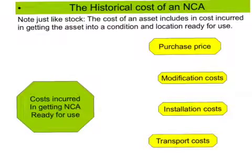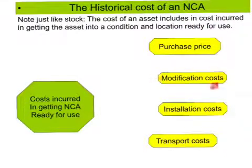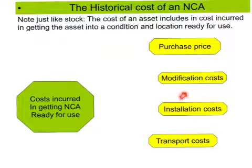In terms of establishing the cost of an asset, we follow the same principles we apply with stock. We add any cost incurred in getting the asset into a condition and location ready for use. This includes the purchase price, as well as any modification costs incurred in getting that asset into a revenue-generating capacity — for instance, attaching a webcam to computer hardware to conduct webinars. We also include any installation costs; things like photocopiers or computer hardware that arrive in kit form need to be assembled by someone in order to create an asset that's in a revenue-generating form.